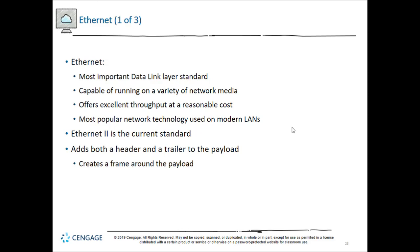Ethernet is a data link standard — not an IP addressing standard, though many people conflate the two. It was developed by DEC, Intel, and Xerox before the IEEE began to standardize it. Unlike higher-layer protocols, Ethernet adds both a header and a trailer to the payload it inherits from the layer above, creating a frame around the payload.